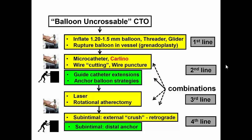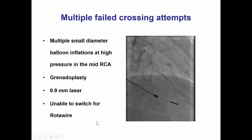Therefore, we have a balloon uncrossable lesion, for which it is important to have a systematic approach, starting with small balloons and progressing to microcatheters and strategies to increase guide catheter support, laser or rotablation, and then subintimal techniques in the end.